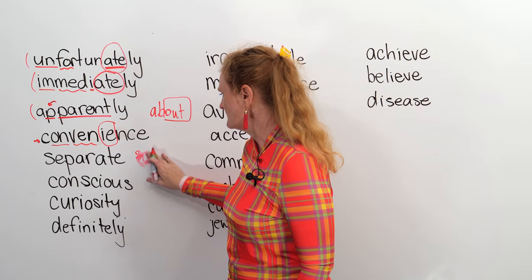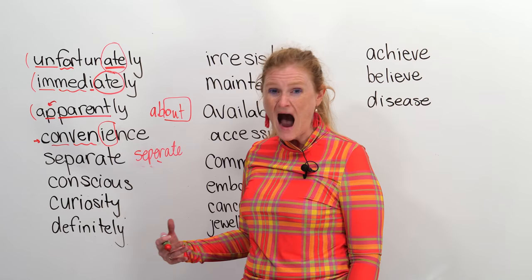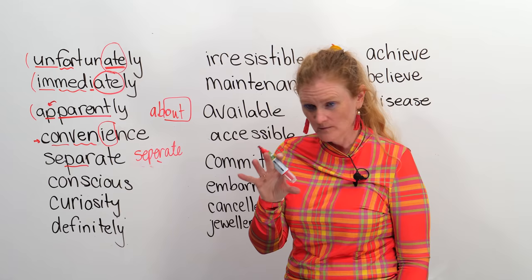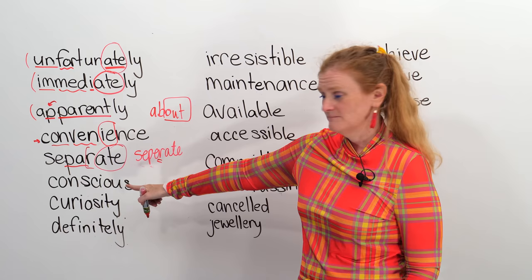I always spell 'separate' like S-E-P-E-R-A-T-E. Apparently, it's separate — S-E-P-A-R-A-T-E. In this word, I can see the word 'par.' This is our problem area. So I remember: separ. And then you could add another 'ate' here. As long as you get the A-R and not the E-R, you're okay.